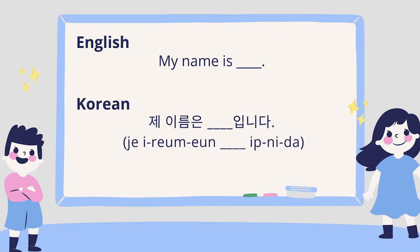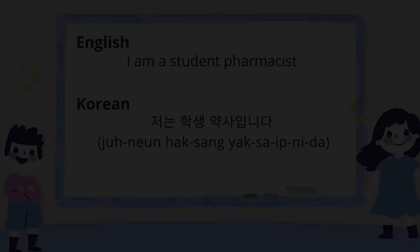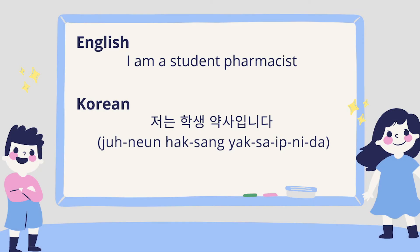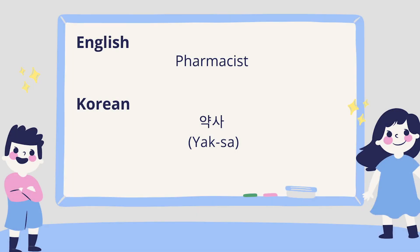My name is Min Young. — 제 이름은 Min Young입니다. I am a student pharmacist. — 저는 학생 약사입니다. Pharmacist — 약사.